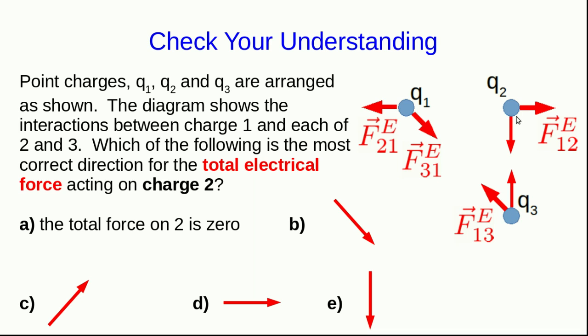The force that 3 exerts on 2 is down in the diagram, and thus the right answer is going to be the sum of these two force vectors, or in other words, B.